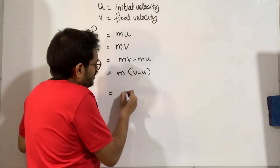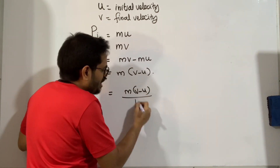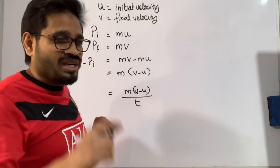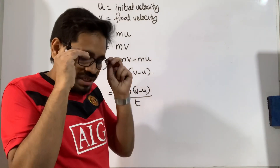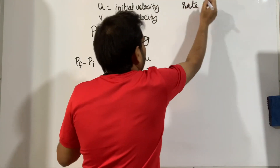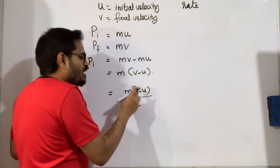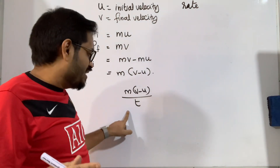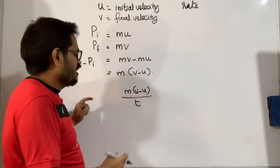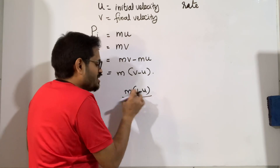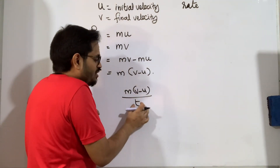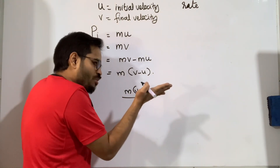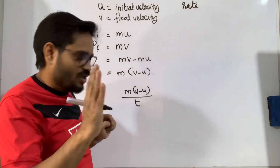In physics, when we divide values with respect to time, we use the term 'rate' — things happening at a particular time. So if we write m(v − u) divided by t, reading it as a statement: the denominator t means 'rate,' and m(v − u) is the change in momentum. So this is the rate of change of momentum.